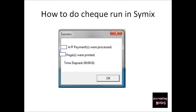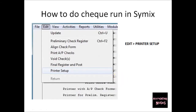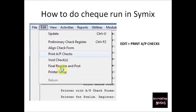After printing the Preliminary Check Register, there will be a pop-up — click OK. Next, change the printer again: this time you need to change it to the printer where the checks will actually be printed, so go to Edit, then Printer Setup, and change the printer.